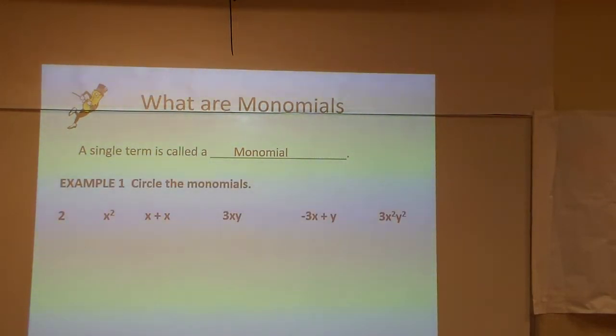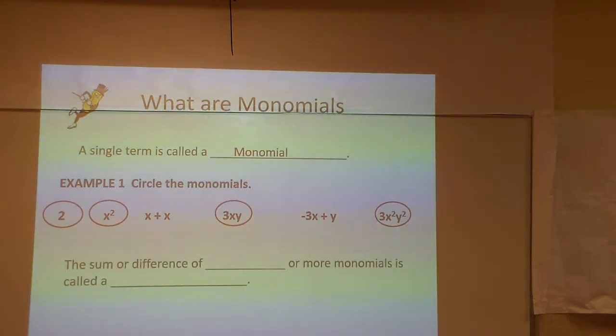In examples, this would be like the number 2 is a monomial, x squared. x plus x is not, 3xy is, the negative 3x plus y. Notice if you have a plus or a minus sign, it's definitely not a monomial. It has to be just one term.